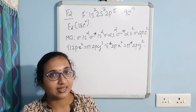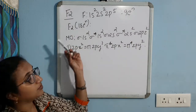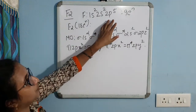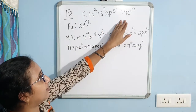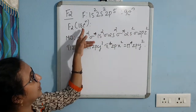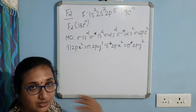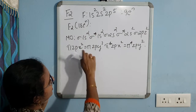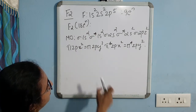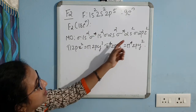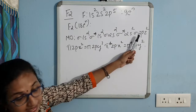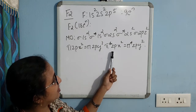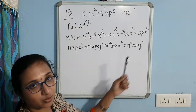Now let us take the example of the fluorine molecule. The atomic orbital configuration of fluorine is 1s², 2s², 2p⁵, containing 9 electrons. So a fluorine molecule contains a total of 18 electrons — more than 14. Its MO configuration is: sigma 1s², sigma* 1s², sigma 2s², sigma* 2s², sigma 2pz², pi 2px² = pi 2py², pi* 2px² = pi* 2py².